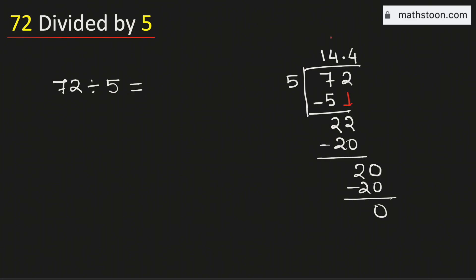Therefore, 72 divided by 5 is equal to 14.4 and this is our final answer.